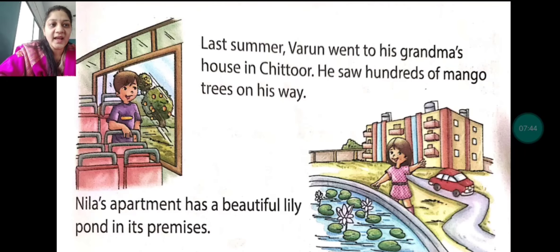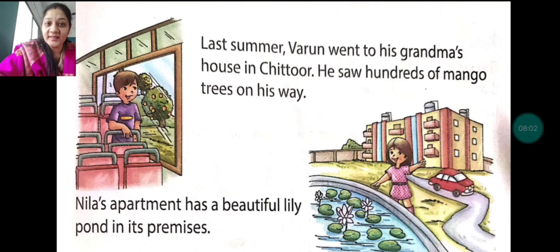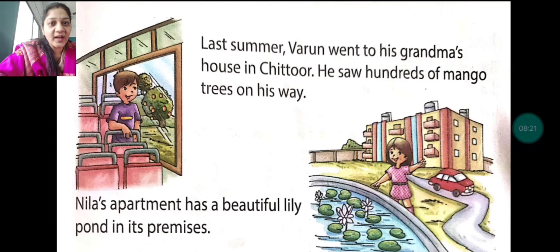Next: last summer, Varun went to his grandma's house in Chitoor. He saw hundreds of mango trees on his way. What is the king of fruits in summer? Mango! When we talk about summer, the first fruit that comes to mind is mango — it's a summer fruit, found in summers. And mango grows on a tree, on a plant, not on the ground.